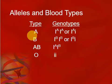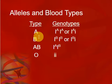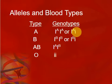With our blood types, we've got A, B, AB, and O. What determines your blood type, of course, is your genotype.